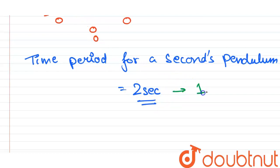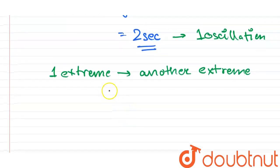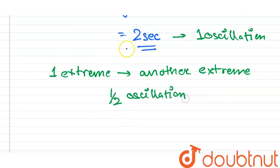And to reach from one extreme to another extreme, it takes half oscillation. So the time taken will be half of the time period.